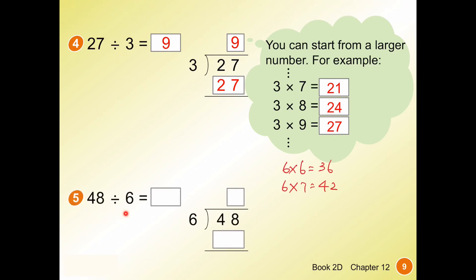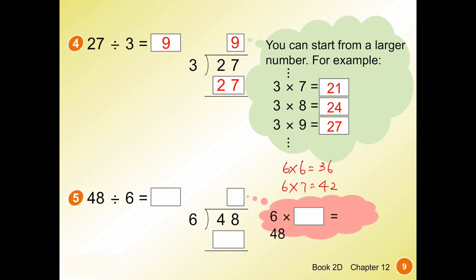Question 5: 48 divided by 6 equals what? 48 goes inside the division sign, 6 goes outside. Since 48 is large, we start from a bigger multiple: 6 times 6 equals 36, 6 times 7 equals 42, 6 times 8 equals 48 — that's our number. So 6 times 8 equals 48, and 48 minus 48 is 0, no need to write the 0. Answer: 48 divided by 6 equals 8.